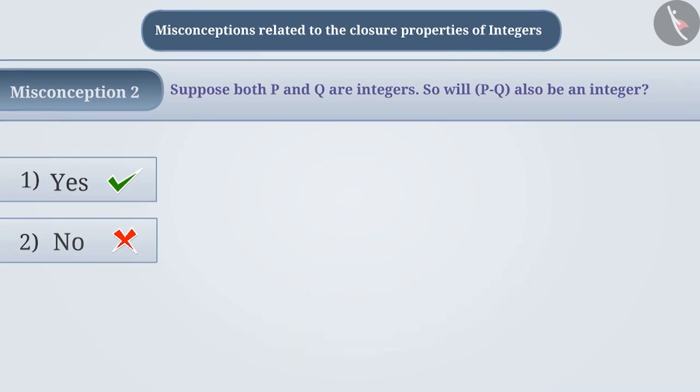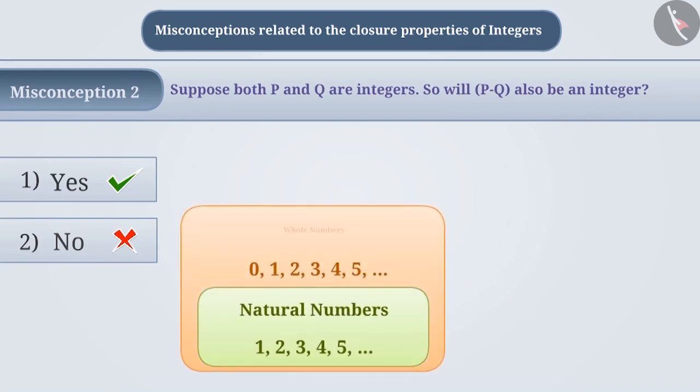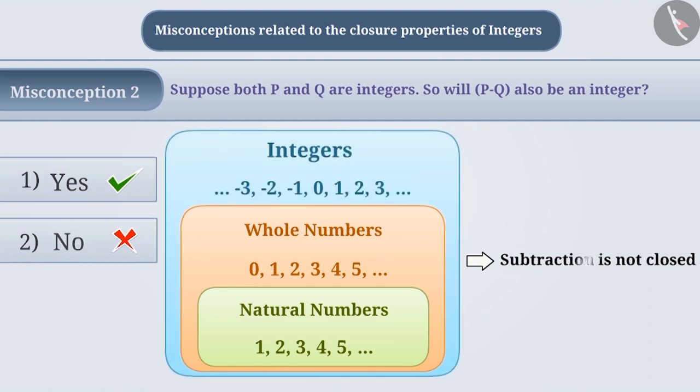Similarly, some children know that the subtraction for natural numbers and whole numbers is not closed, so they assume that the subtraction for integers is also not closed. With this understanding, they choose option 2, which is an incorrect answer.